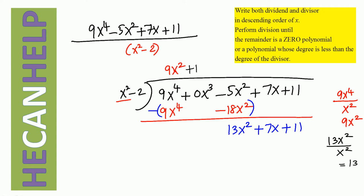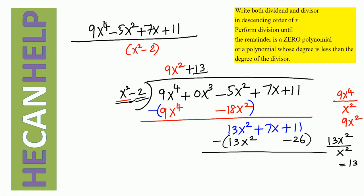So we say 9x squared plus 13. What is 13 times x squared? 13x squared. And what is 13 times negative 2? Negative 26. Put parentheses around this and subtract it. 13x squared minus 13x squared is 0. We bring down 7x. What is 11 minus negative 26? That will be 11 plus 26, which is positive 37.